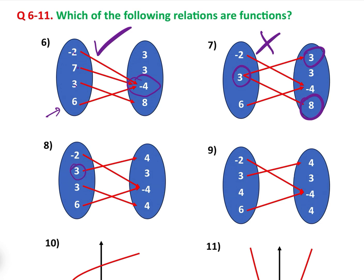Question eight: the element three is mapped to four twice. All that is is a duplicate — it doesn't matter. The element in the input is still mapped to one element in the output, namely three is mapped to four. Even though there's a duplicate, that's fine. That is a function.